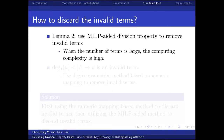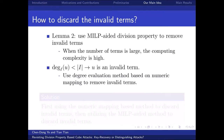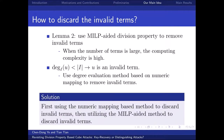The first detail is how to discard invalid terms. According to lemma 2, we can use MILP-aided division property to remove invalid terms. However, when the number of terms is large, the computing complexity is high. When the degree of u is smaller than the size of I, u is an invalid term, so we can use a degree evaluation method based on numeric mapping to remove invalid terms efficiently. Our solution is to first use the numeric mapping-based method to discard invalid terms, and then utilize the MILP-aided method to discard remaining invalid terms.